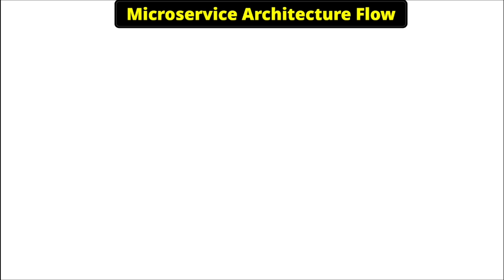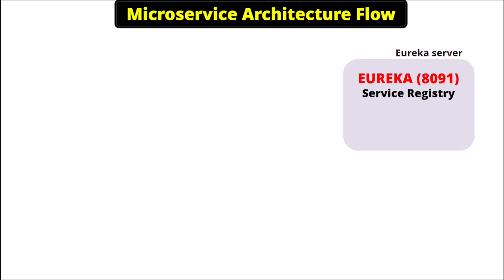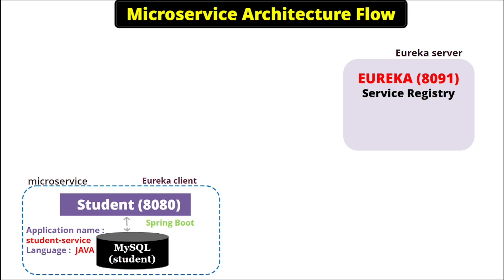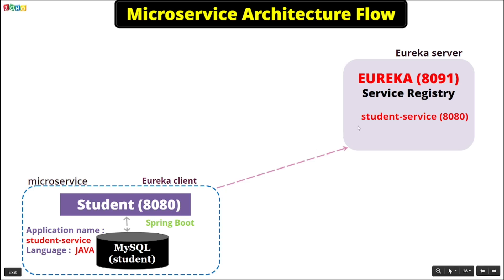Let's understand the flow of microservice architecture when we have all the microservices, Eureka, and Gateway together. Here we have a Eureka server, which is a Spring Boot application running on port 8091. We also call the Eureka server a service registry. This is our first microservice, student, which we already created in the third video — it is running on port 8080. Whenever we deploy this microservice, it starts running on 8080 and registers itself to the Eureka server with its application name student-service and the port.